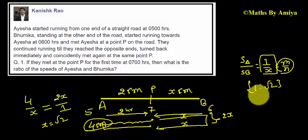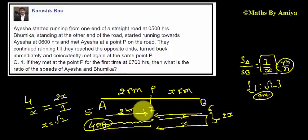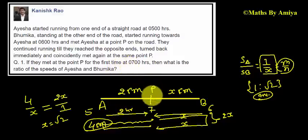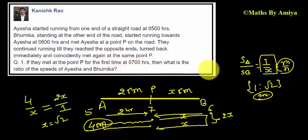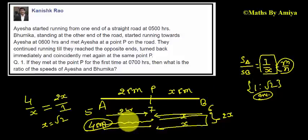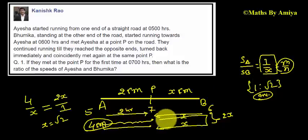Generally we solve this type of question in which we have a time, a first meeting point, and a second meeting point. The best way of solving this: assume the speed ratio is 1 is to X, find the distance, double the distance, get the ratio, and solve the question.